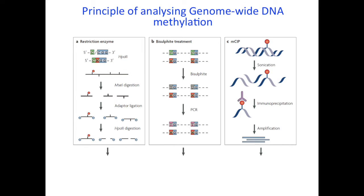RRBS uses bisulfite treatment and we'll come to that in a moment. A third method, quite popular but getting less popular now, is antibody-based. You have an antibody designed to pull down regions of the genome that are heavily methylated — it binds to methylated CpGs and pulls them down. You then fragment those, amplify, and put them through arrays or sequencing. However, in this case you don't get single-base resolution — you get a chunk of the genome which is methylated or unmethylated, analyzed as a large chunk rather than base pair by base pair.